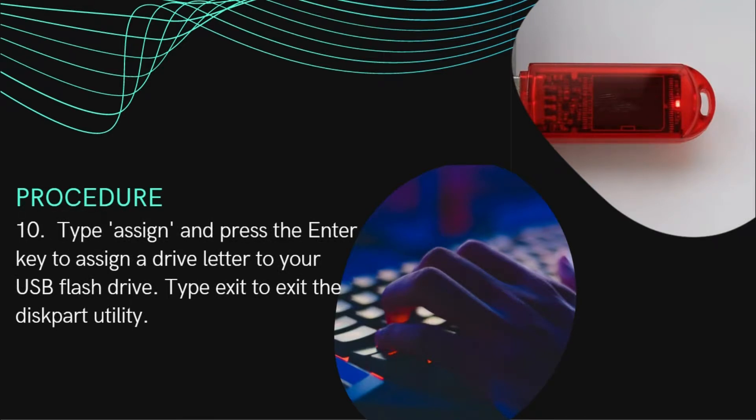To assign a drive letter to your USB flash drive, type 'assign' and press Enter. Then type 'exit' to exit the diskpart utility.